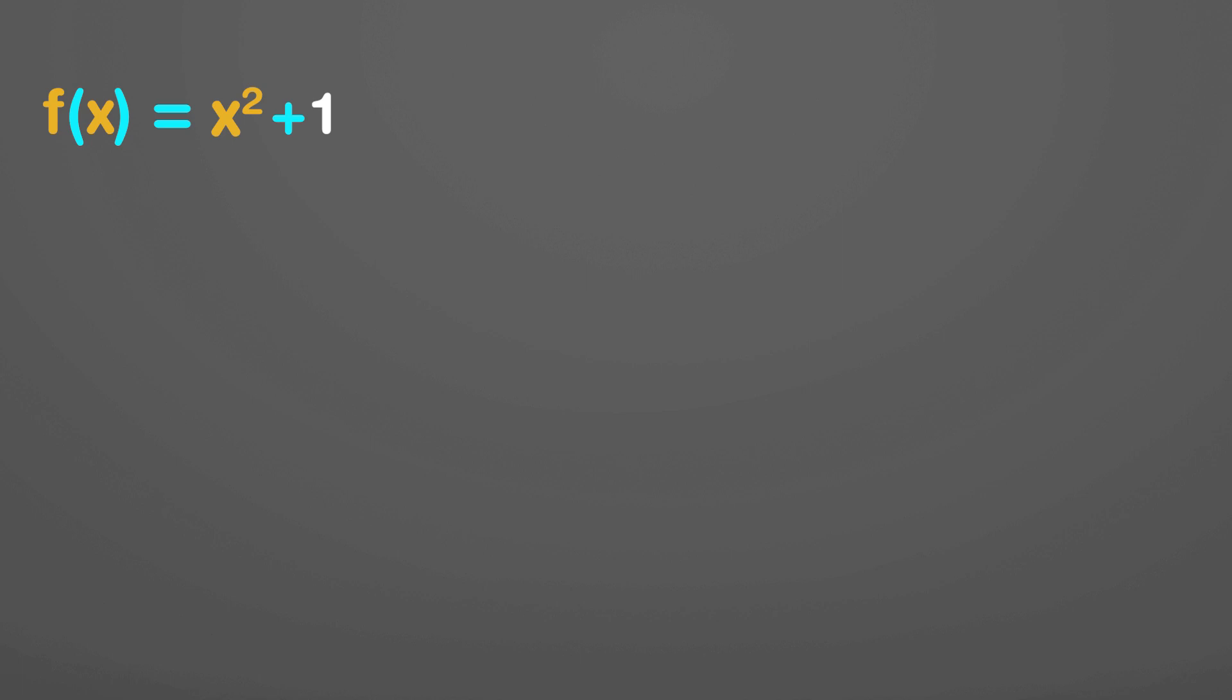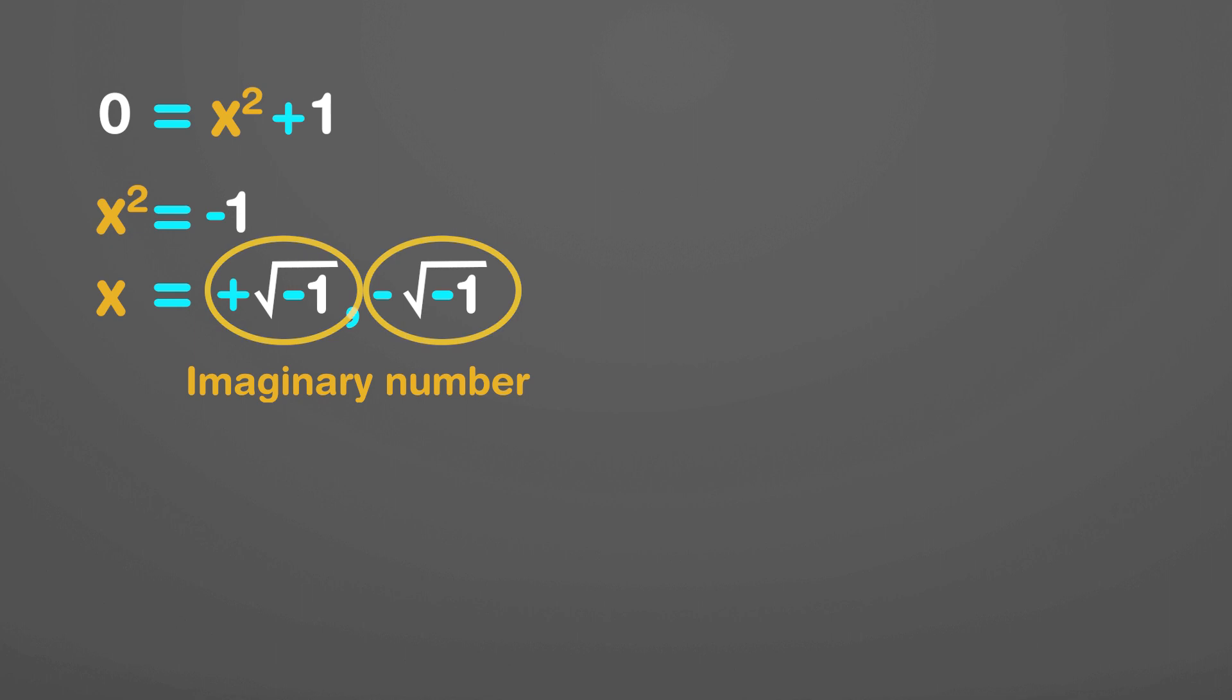Let's try to find these roots by taking f(x) as 0. This gives x squared as minus 1 and x as plus square root minus 1 and minus square root minus 1. Now we've got two special kinds of roots and these roots are imaginary numbers. These are special numbers in the sense that they have a negative sign inside a square root.